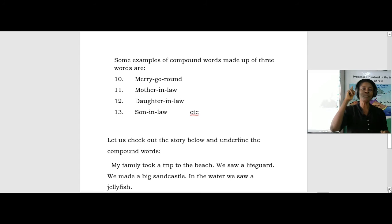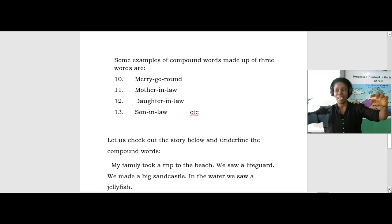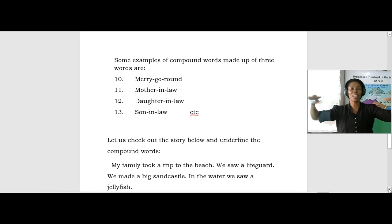One is merry-go-round. Look at it. We have three words. Merry-go-round is an object that is found in the playground. It's just an object, but it has three words coming together to form one as compound words. Merry-go-round. How many words do you have there? Three words. More than two. Merry one, go two, round three. Coming together to form one word. Merry-go-round.